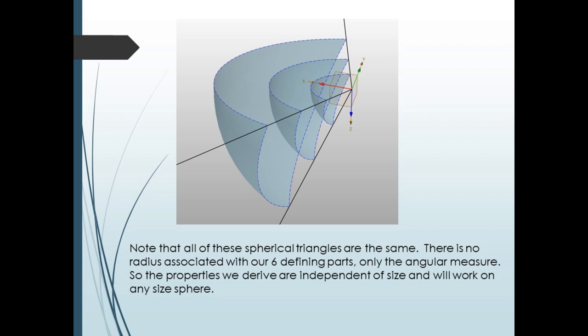So, for instance, all of the spherical triangles shown here are the same. This means that all properties we derive for spherical triangles are independent of the size of the sphere.